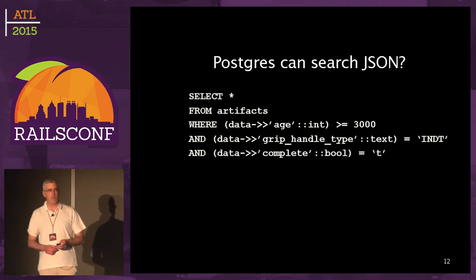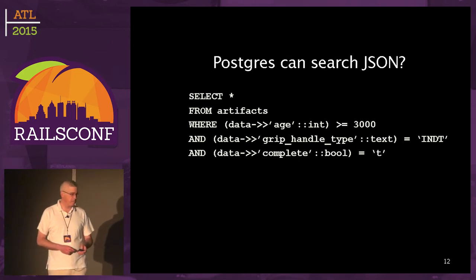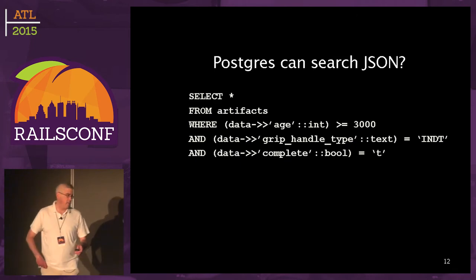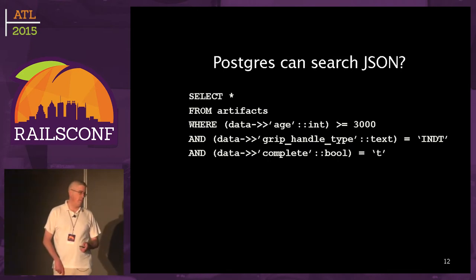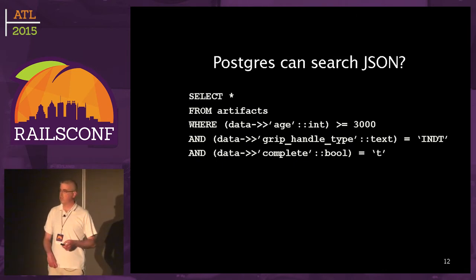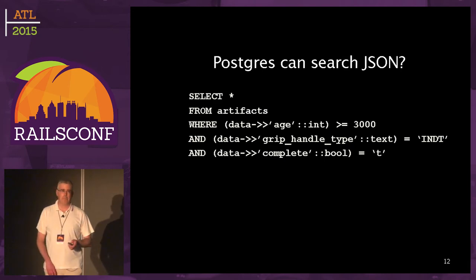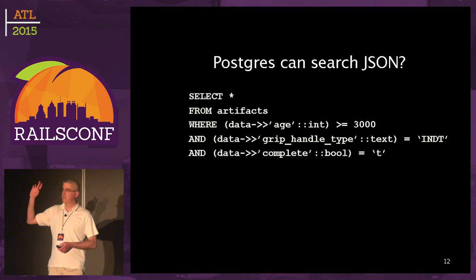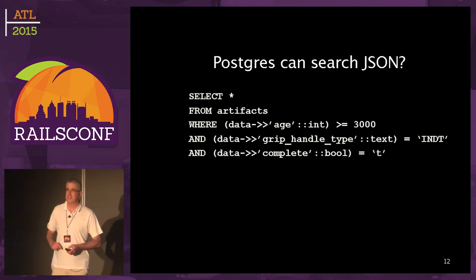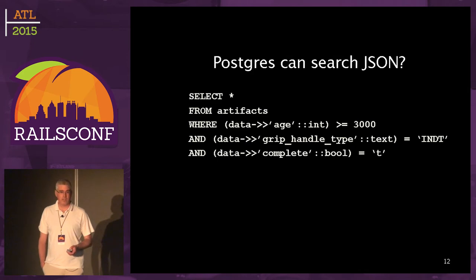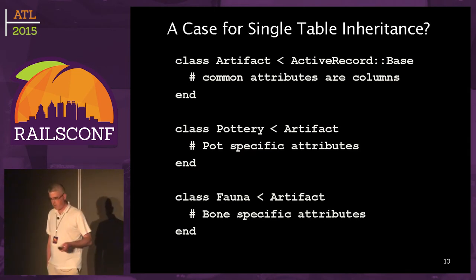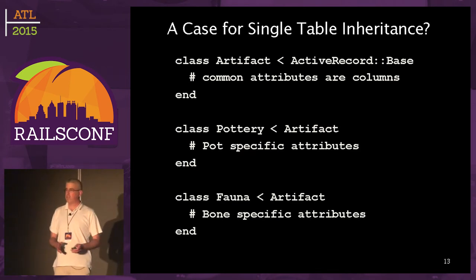I was like: whoa, I wonder if I can use this. Here's an SQL query that says: if we have a single table with everything in it — all the attributes of everything — and we have a data column that's a JSON column, then we can actually search on the keys. I wanted to see if I could use single table inheritance to have the stuff in common in actual database columns, and then put everything that is a variant into this data column.